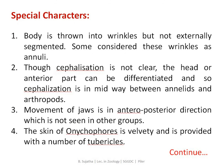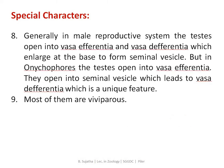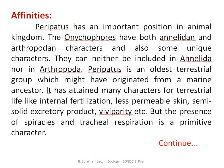Summarizing special characters: body is thrown into wrinkles but not externally segmented; cephalization is not clear; movement of jaws is unique and not seen in other groups; skin is velvety with tubercles; tracheal respiration with spiracles irregularly distributed on the body surface; true nerve cords connected with transverse commissures resembling Platyhelminthes; eyes not as complicated as arthropods; male reproductive system with testis opening into vas deferentia then seminal vesicle is a unique feature; and most of them are viviparous.